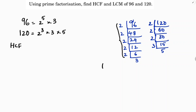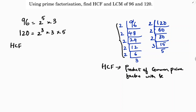HCF is the product of common prime factors with the least power. For HCF of 96 and 120, we look at the common prime factors. We have 2 power 5 and 2 power 3, so the common factors are 2 and 3.